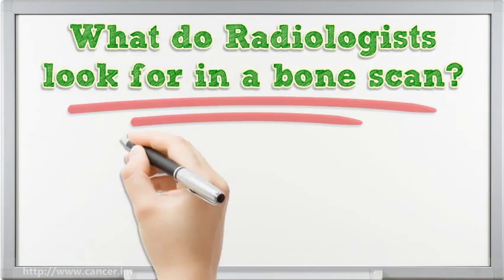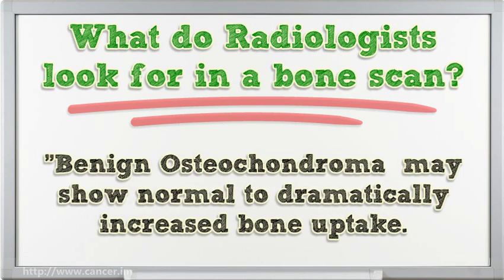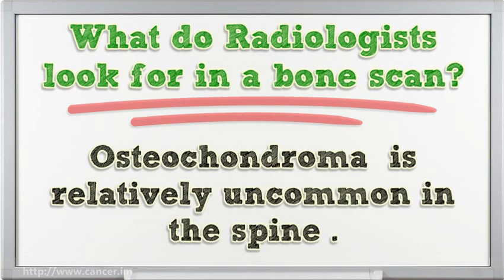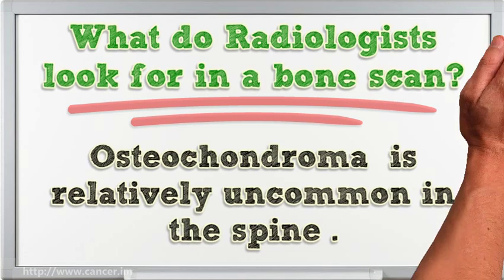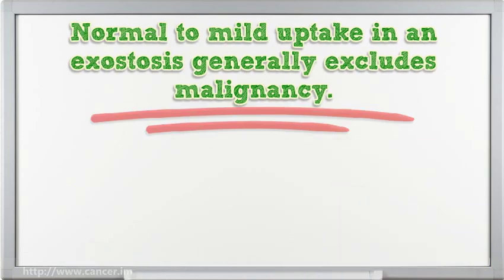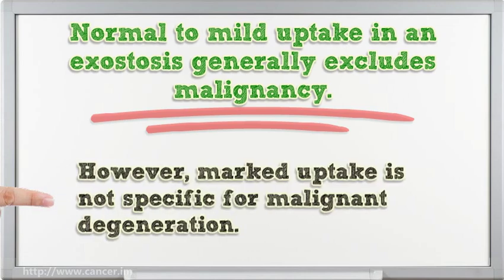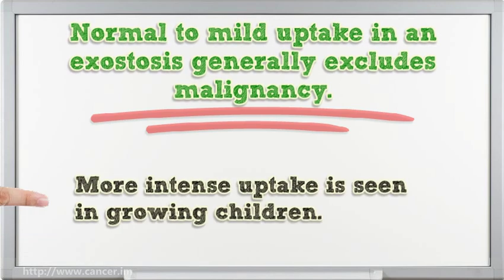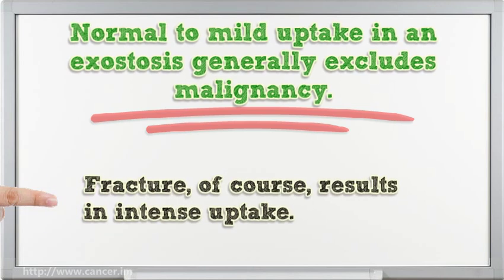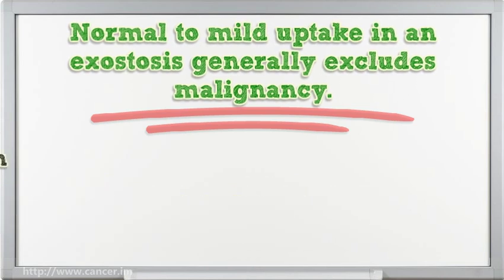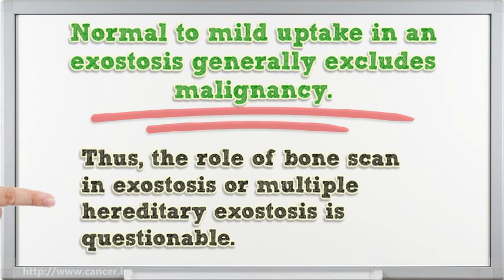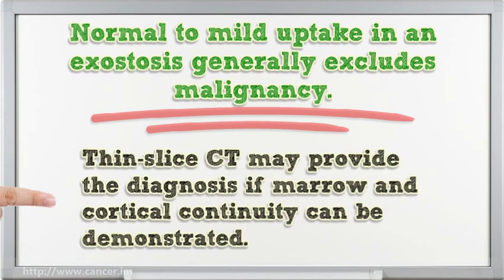What do radiologists look for in a bone scan? Benign osteochondroma may show normal to dramatically increased bone uptake. Osteochondroma is relatively uncommon in the spine. Normal to mild uptake in an exostosis generally excludes malignancy; however, marked uptake is not specific for malignant degeneration. More intense uptake is seen in growing children. Fracture results in intense uptake. Thus, the role of bone scan in exostosis or multiple hereditary exostosis is questionable. Thin-sliced CT may provide the diagnosis if marrow and cortical continuity can be demonstrated.